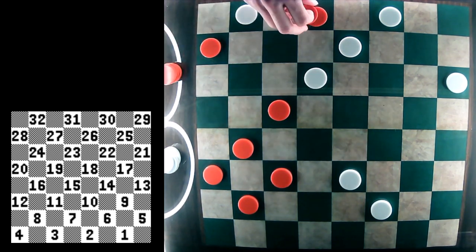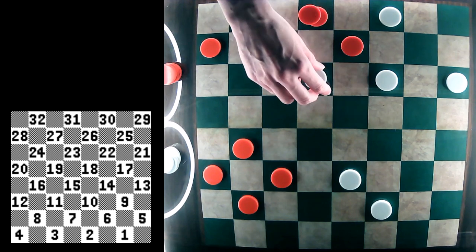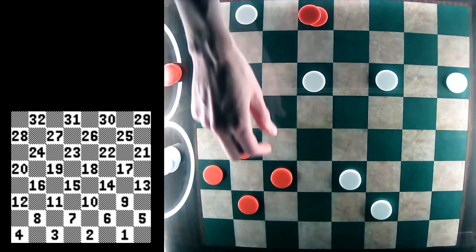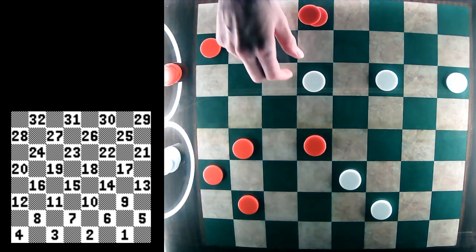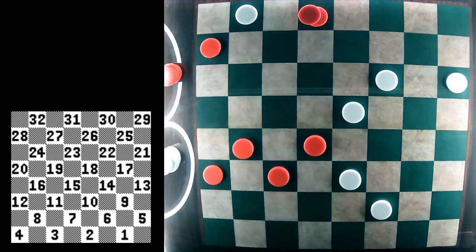And it's best for, again, white just to evade trouble, exchange off this piece. And then after 11-15, 23-18, 8-11, we have a great drawn game.